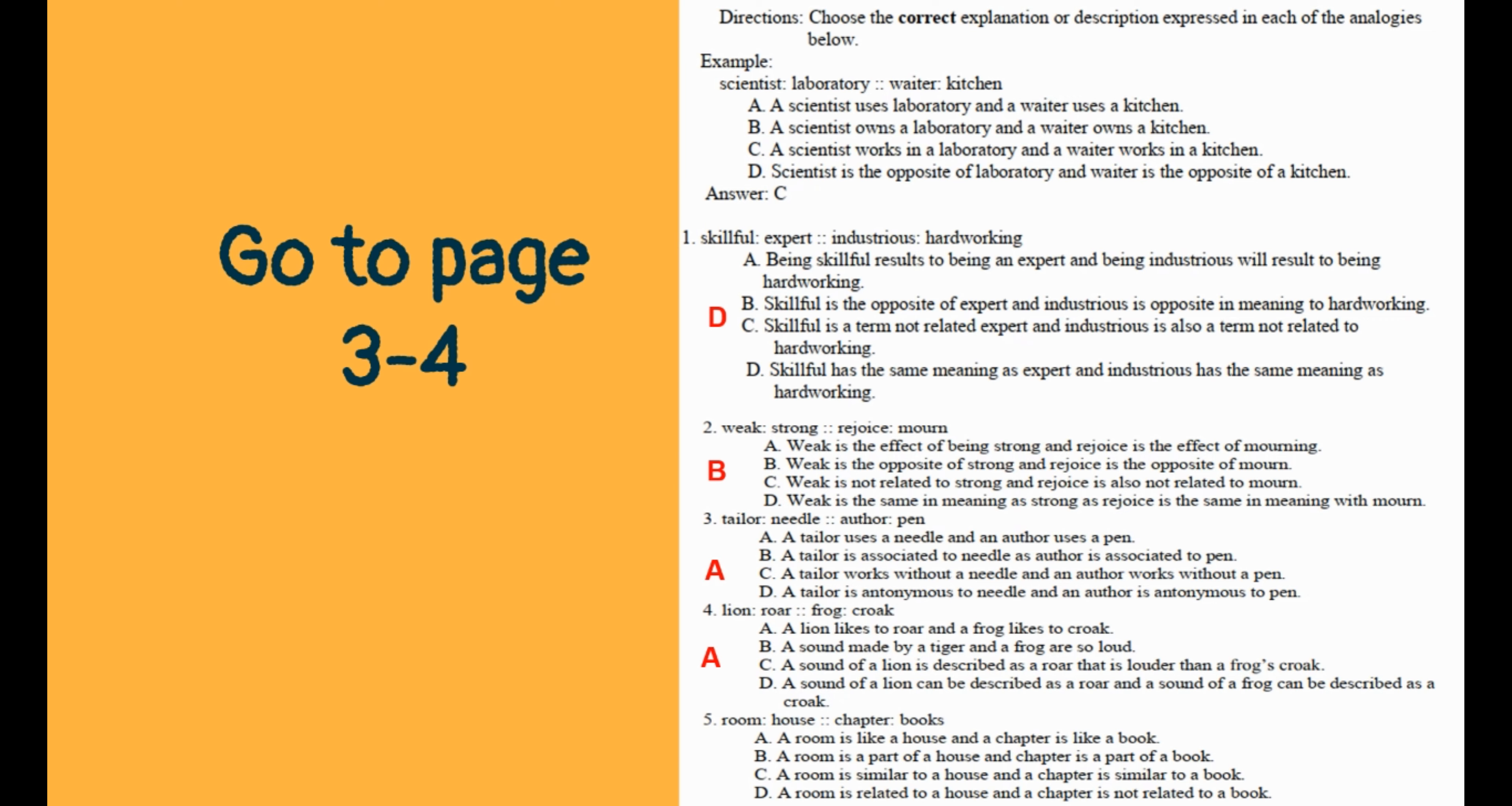Number five: a room is to house as chapter is to book. The correct answer is letter B. A room is part of the house, chapter is part of the book.